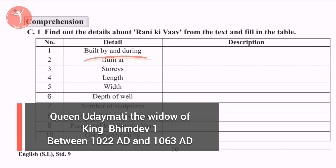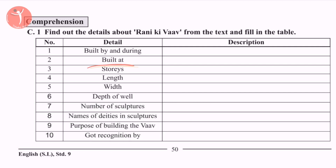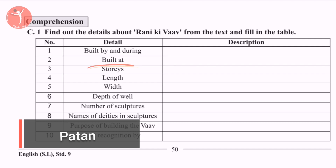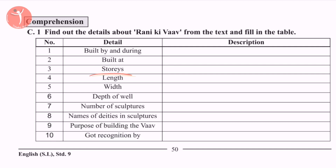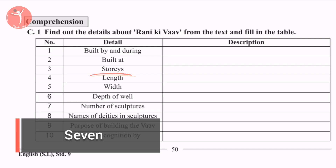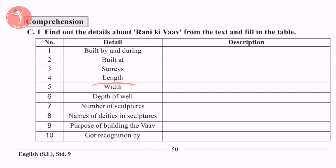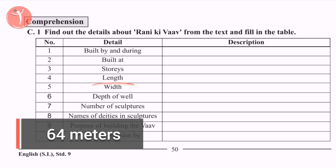The third point is Stories — Rani ki Vav has 7 stories. Number 4 is Length. The length of Rani ki Vav is 64 meters.